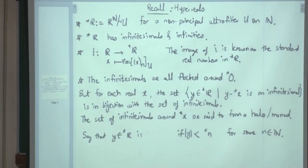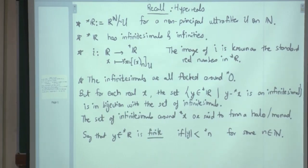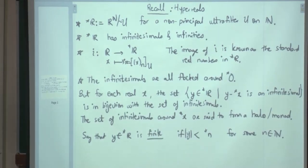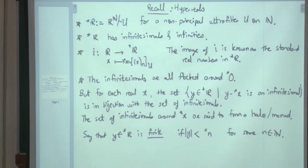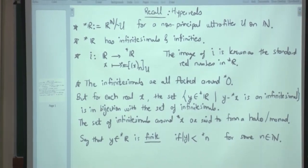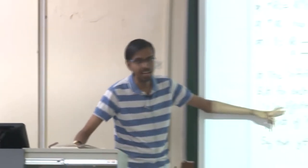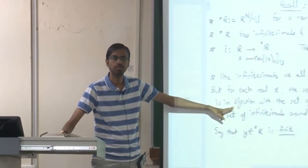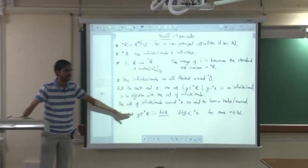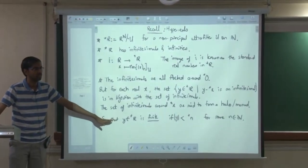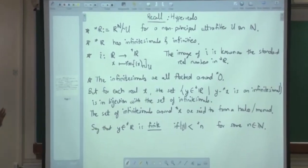Can you give an example of something which is not finite? The sequence n diverges, so therefore it is not finite. We can only do this standard and non-standard decomposition for finite hyperreals; otherwise we do not talk about it.